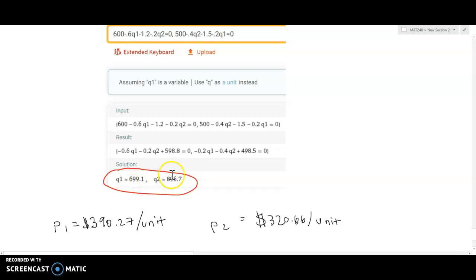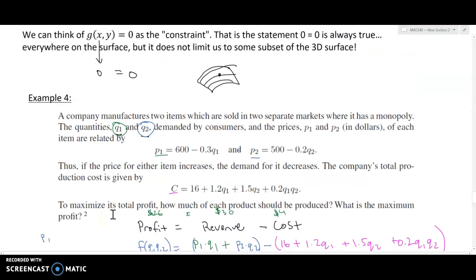If you want to determine how much you sell them for, recall that p1 is, once we know q1, that'll tell us what price to sell product one for, and once we know q2, that tells us what price to sell product two for.